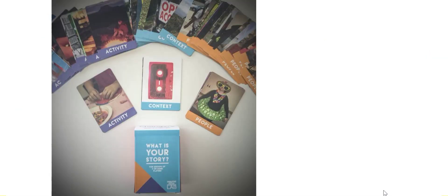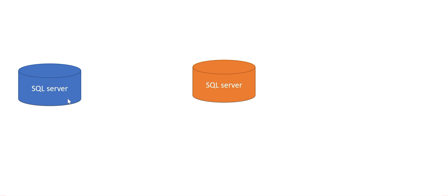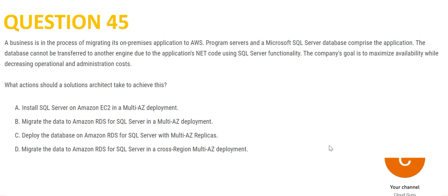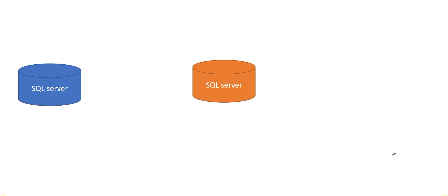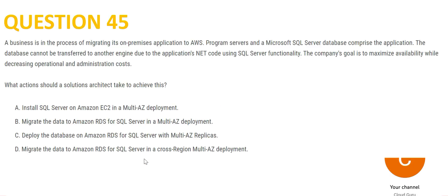Question 45 — please pause the video and understand the story first. In short: you have SQL Server on-premises and you want to move it to AWS, but it must remain SQL Server because the application's .NET code uses it. The company's goal is to maximize availability while decreasing operational and administration costs. Applying the technique: to move this, use RDS for SQL Server. Option A is ruled out — putting SQL Server on an EC2 instance means you still maintain operational and administration costs, which defeats the purpose.